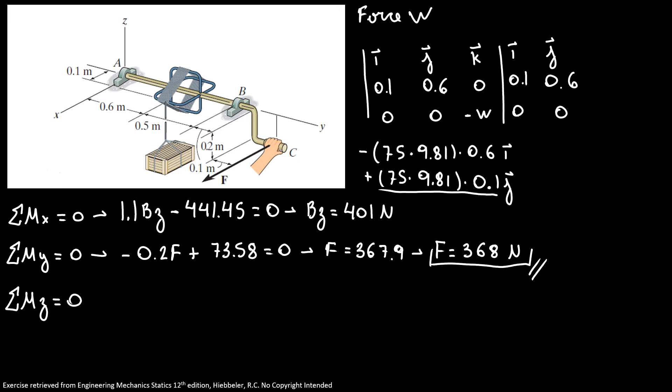Now we have the sum of moments in Z, which is -1.4F minus 1.1BX equals 0. So BX equals -468 N in three significant figures.